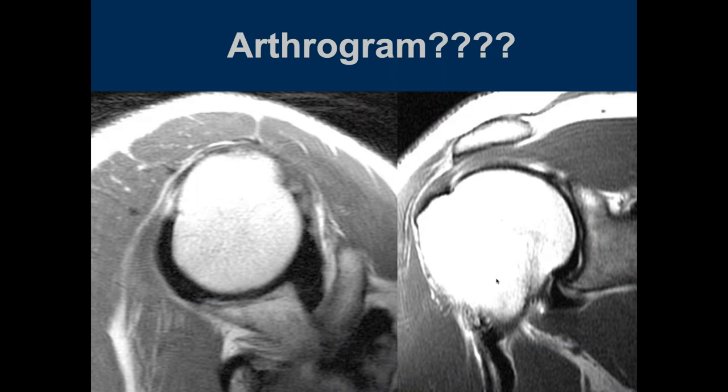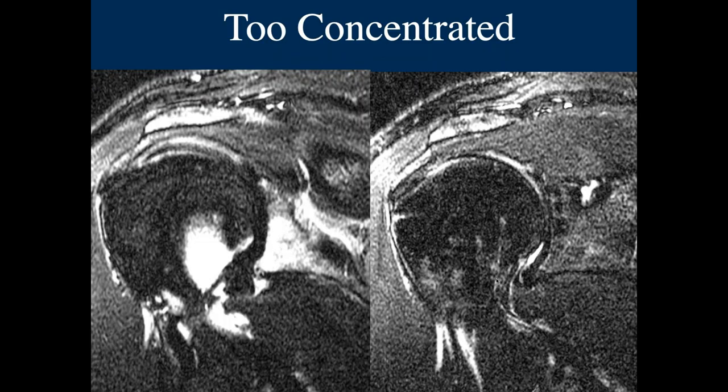Case showing what happens when you don't dilute the gadolinium contrast — the joint space is markedly hypointense on T1 weighted images because the contrast was not diluted. You get very little tissue signal and you can see a little contrast imbibed in the bone. We typically like contrast diluted 200 to 1.